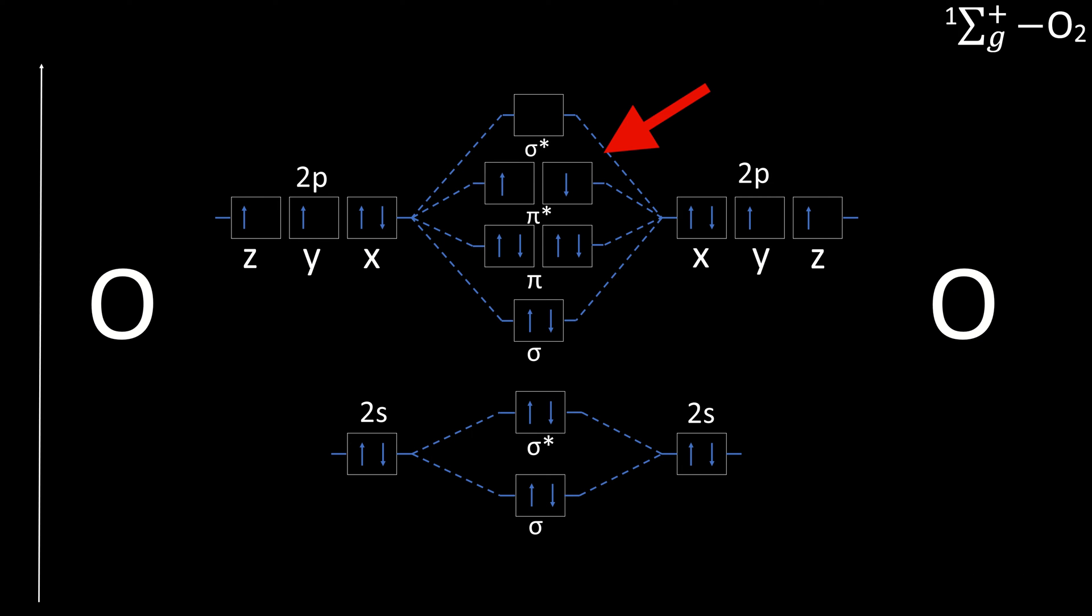When the spin of the electrons is opposite, this is the singlet state, which has a higher energy than the ground state and is highly reactive. There is another singlet state in which the electrons are in the same antibonding pi orbital. This state has less energy than the last one.